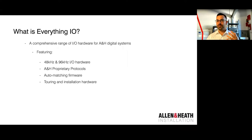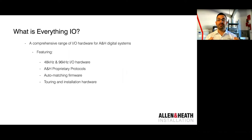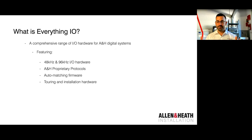All of these boxes feature Allen & Heath proprietary protocols — digital audio protocols we've developed to transmit audio between our mixing systems and IO boxes. The main features are boxes that run at either 48kHz or 96kHz sample rates, and they offer auto-matching firmware. Auto-matching firmware means that when you connect an Allen & Heath box to a mixer, it automatically recognizes the firmware and the mixer will update or downgrade immediately so the box is fully compatible and ready to work — in a matter of seconds.